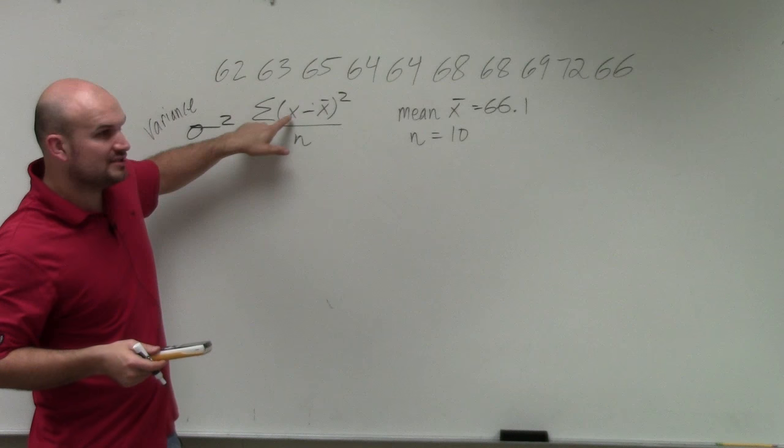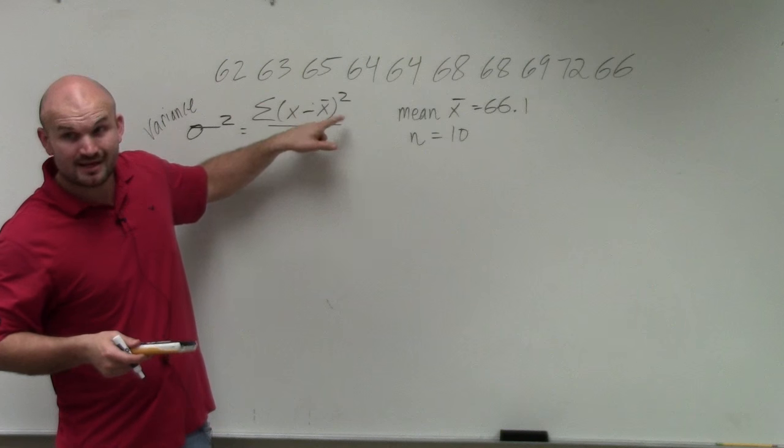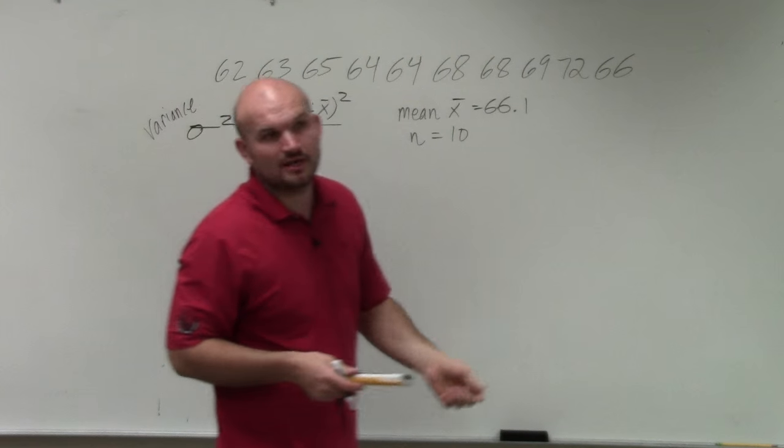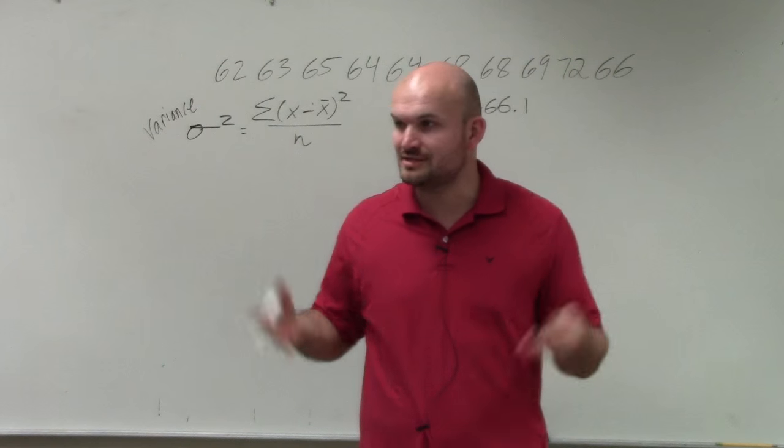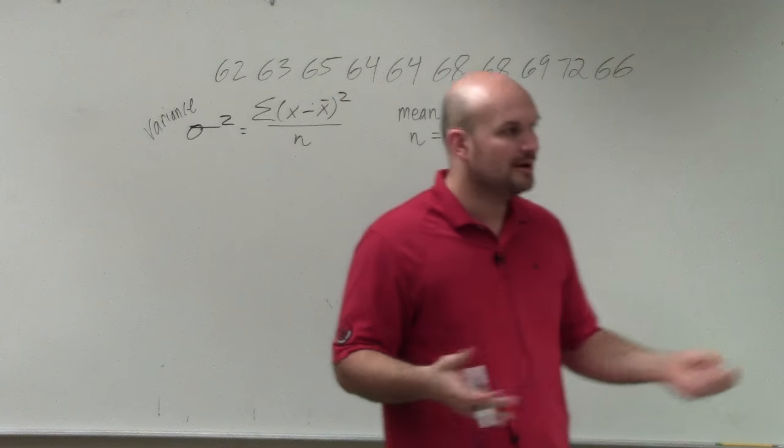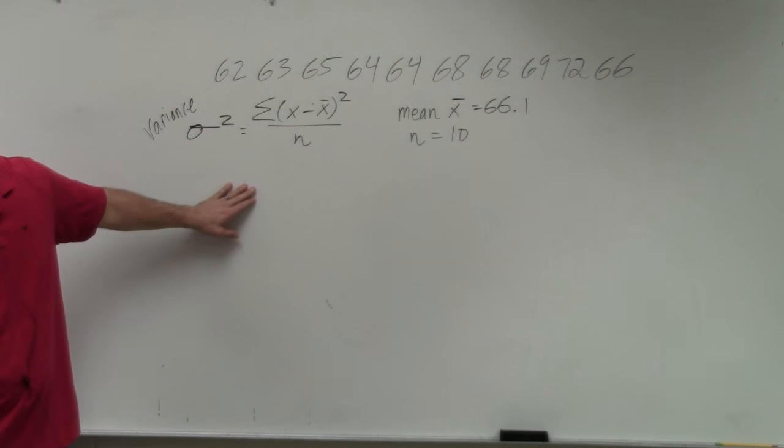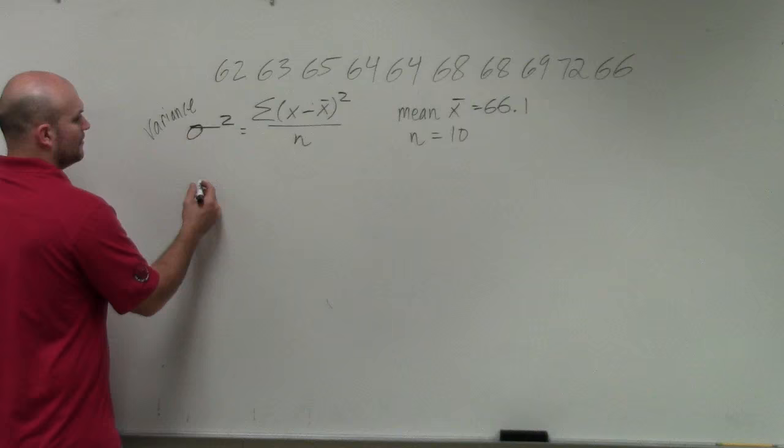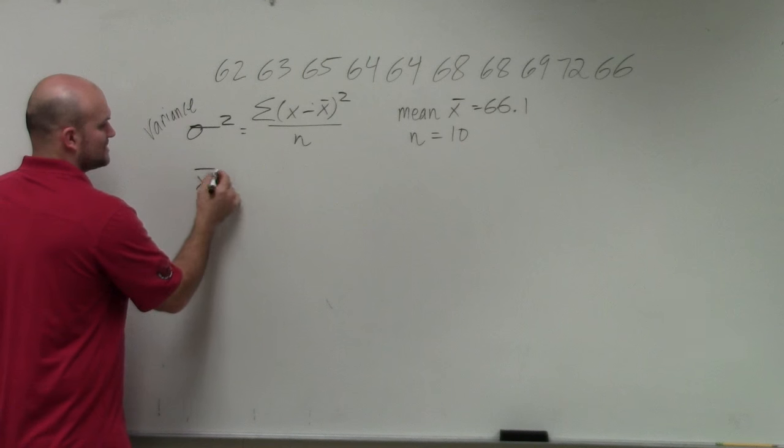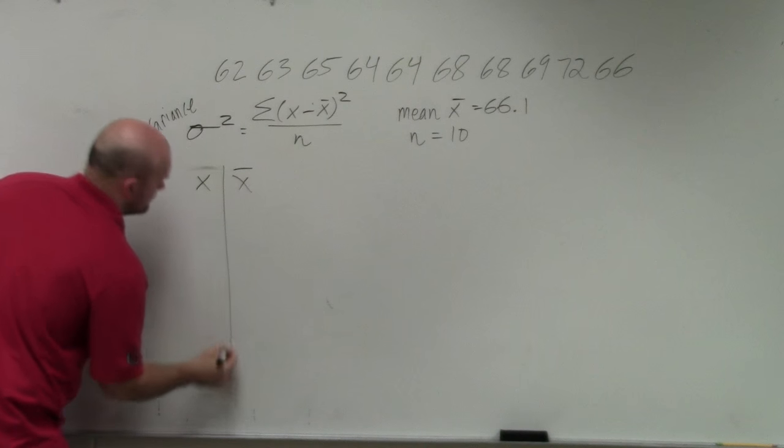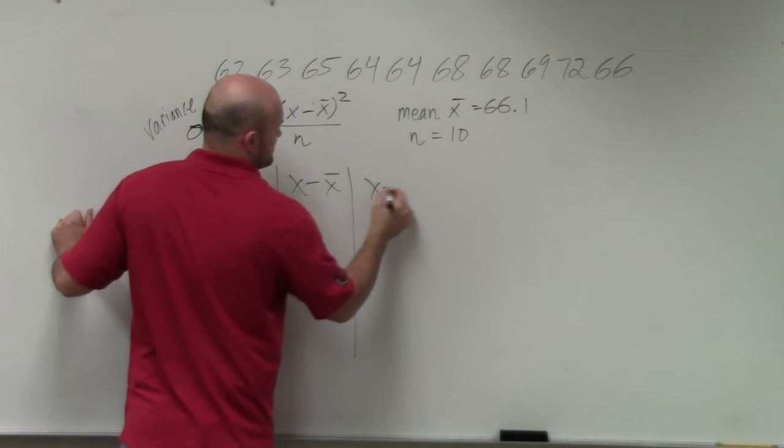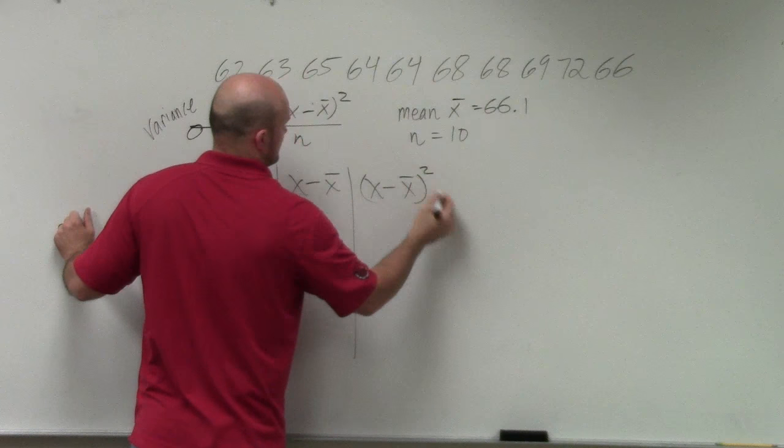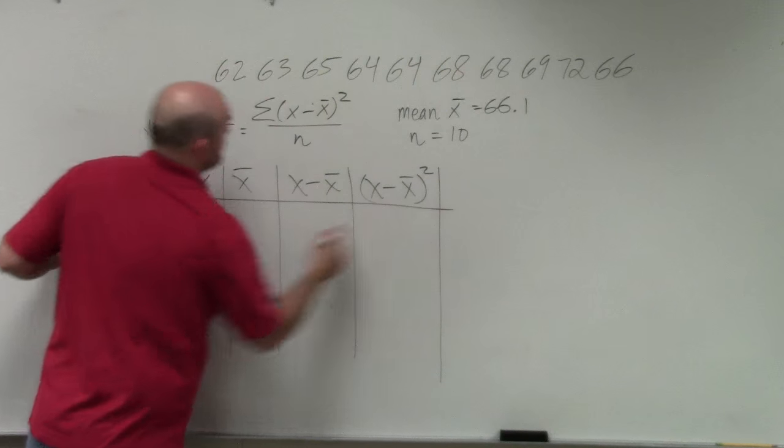And then what we need to do is take each of these values, subtract it from the mean, and then square it, and then add those all up together. So a lot of students, when they're doing these problems, are not creating tables. If you guys remember, when I introduced this, I said create a table. That's the easiest thing to do. I know it's a little bit of work, but if you want to be organized and make sure that you get the answer correct, that's what I'd recommend that you go ahead and do. So what we do is just create, we have a table for x, and then the mean. Then we have x minus the mean. Then we have x minus the mean squared.